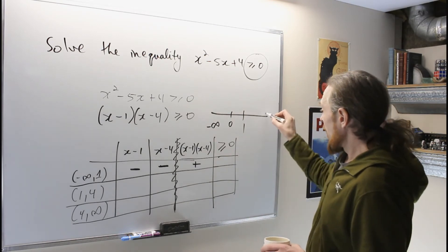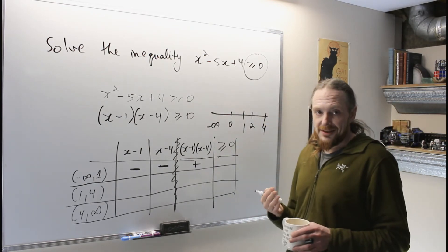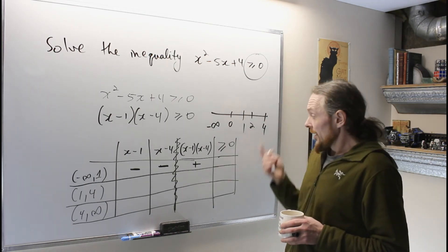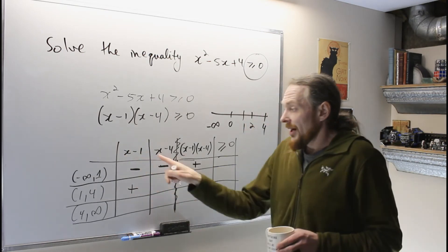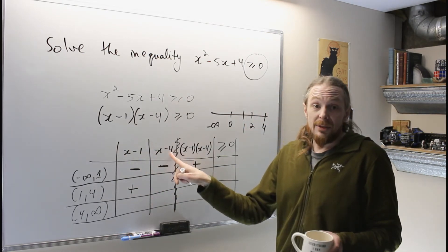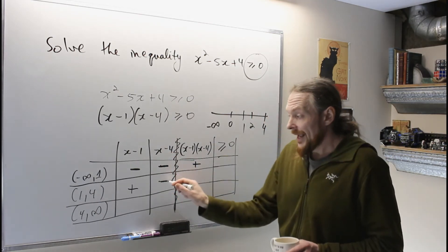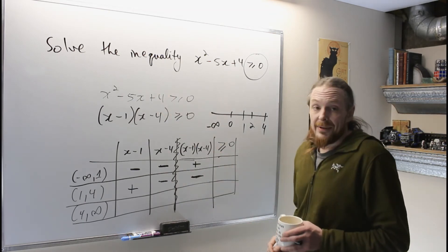In the next interval from 1 to 4, 2 is in there. I usually just pick a nice integer that's in the interval. Don't be fancy with your numbers. So 2 is in there. I'm going to pick it. 2 minus 1 is 1, which is positive, but 2 minus 4 is negative 2, which is still negative. All I need is the sign, so I get a negative. Negative times positive is negative. So this quadratic is negative in that interval.